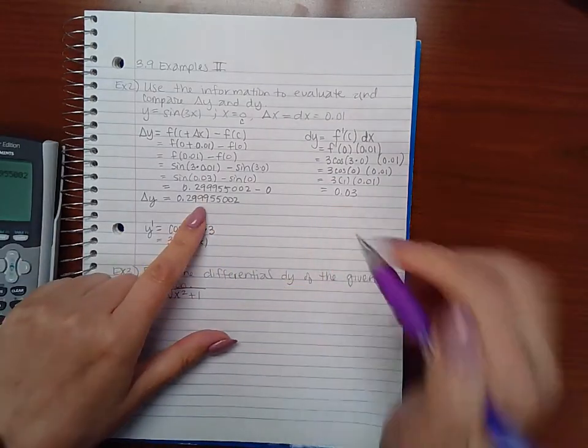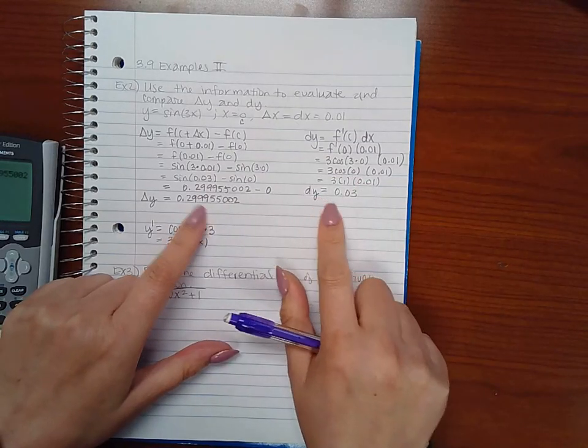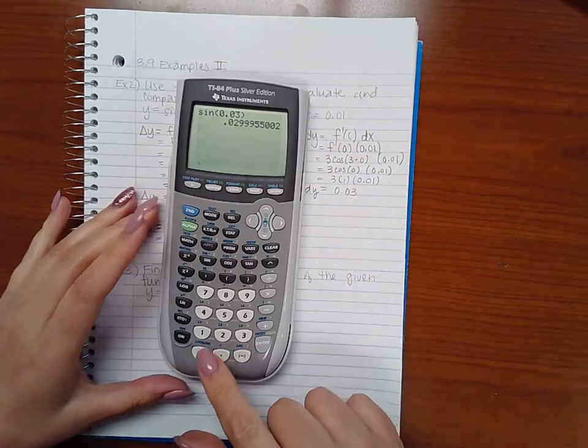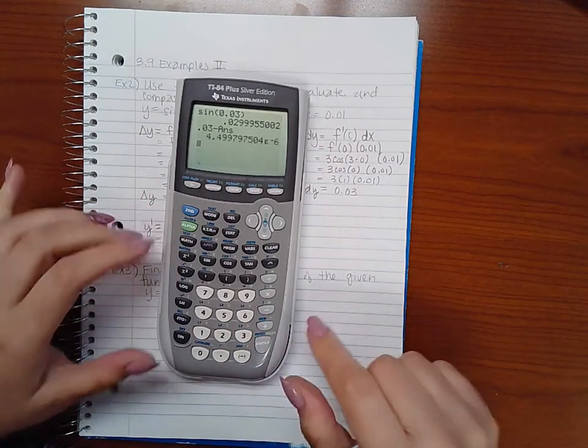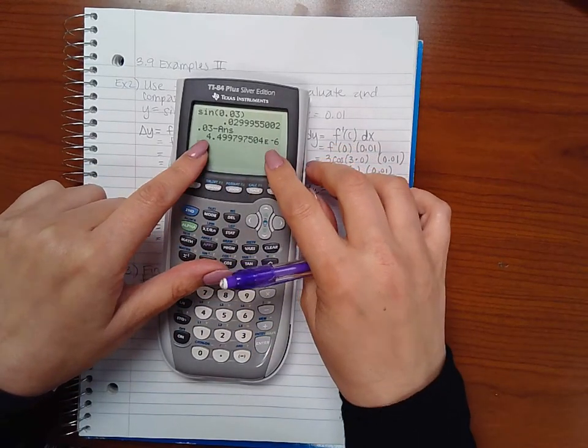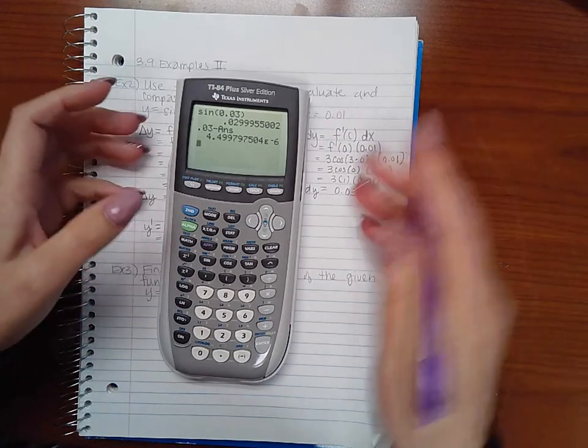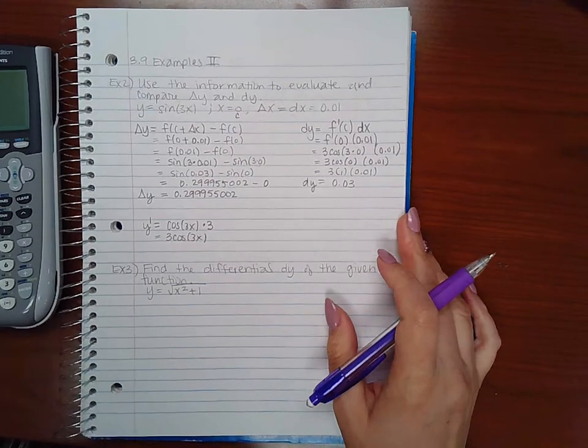And if you notice these are very close to each other. They are only off by a little tiny bit. So 0.03 minus that answer, they are off by 0.0000004. So they are very, very close to each other there.